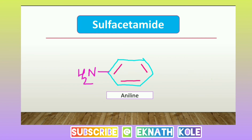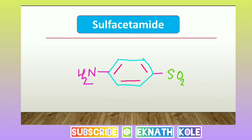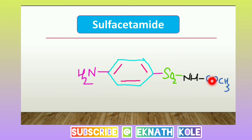If you don't remember the sulfonamide structure, start with the aniline structure — a benzene ring with an NH2 group. Number the ring: at position 1 you have NH2 (aniline), at position 4 you add the SO2 group. Then attach the NH and acetamide group (CO-CH3), giving you the sulfacetamide structure.